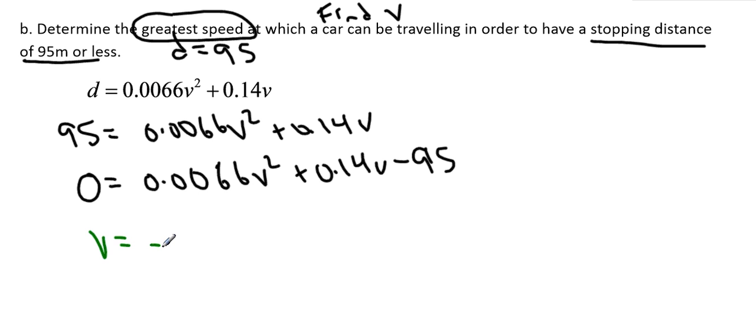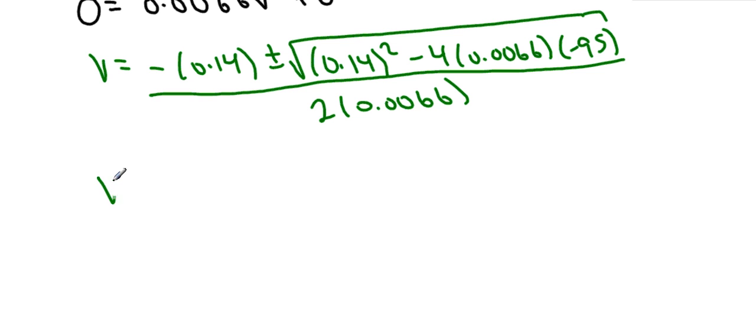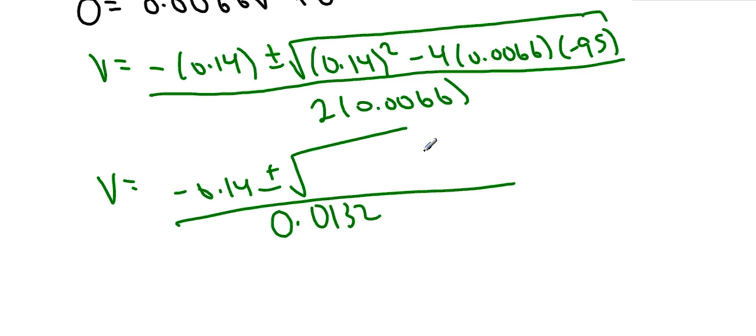v equals negative b plus or minus the square root of b² minus 4ac, all of this divided by 2a. So calculators please. We know that this is 0.01 - negative 0.01 - I added an extra zero in there, we don't want to do that. We know that this is negative 0.14, and it's going to be divided by 2 times 0.0066, so 0.0132.